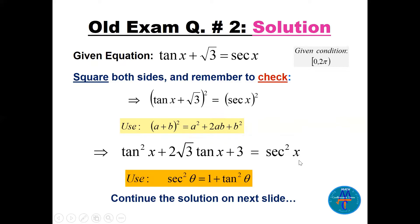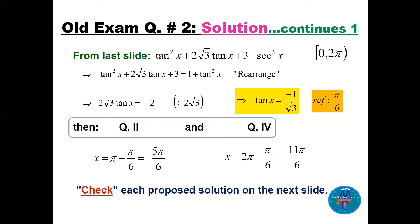After substitution, tan²x cancels on both sides. Taking 3 to the other side gives −2, then dividing by 2√3 — the 2 cancels — and we get tan x = −1/√3. After simplifying everything in the equation, the reference angle is π/6 (30 degrees), and tangent is negative.